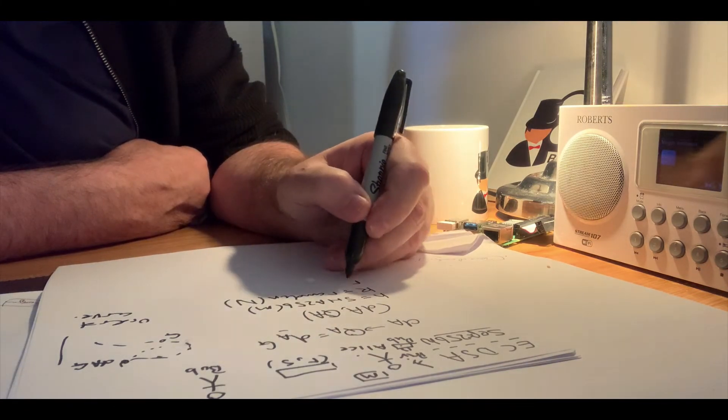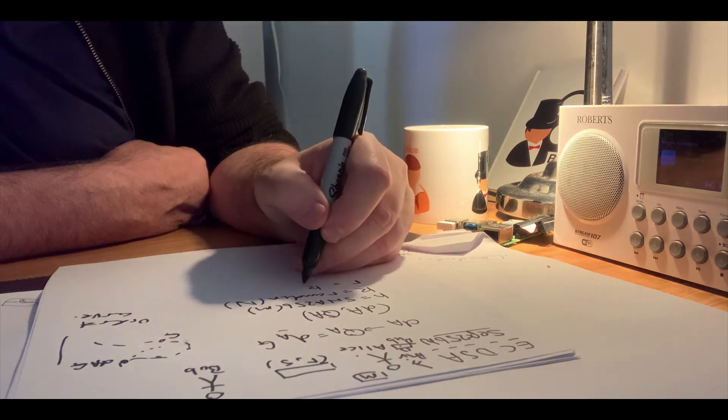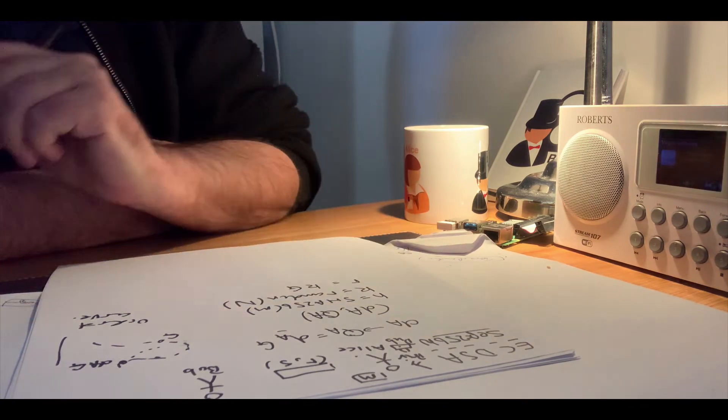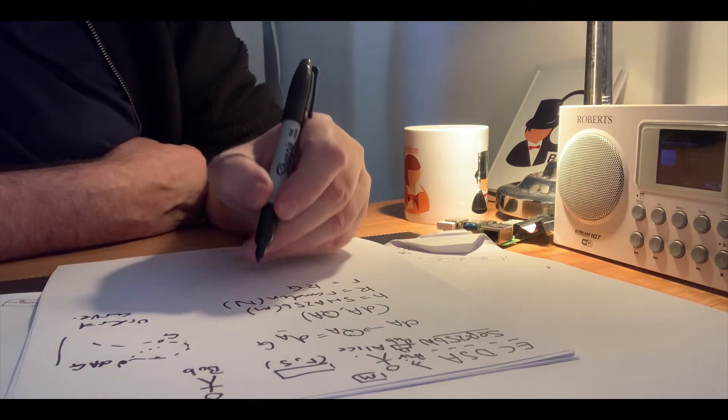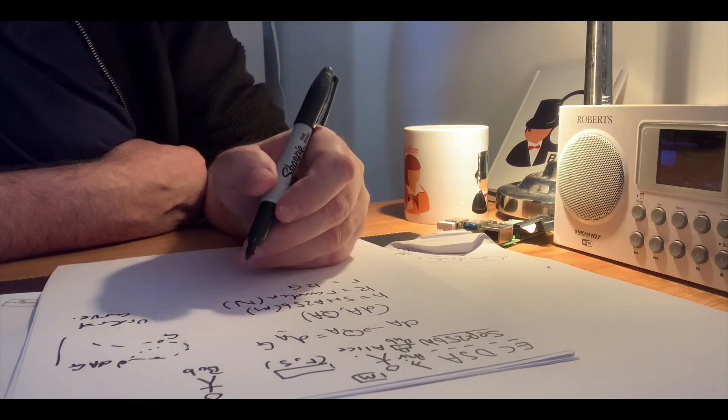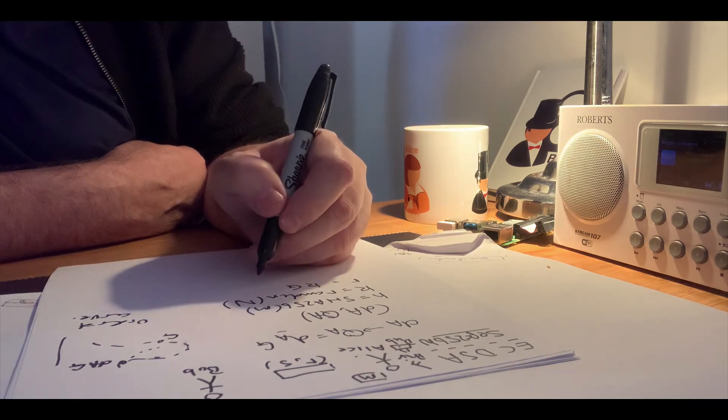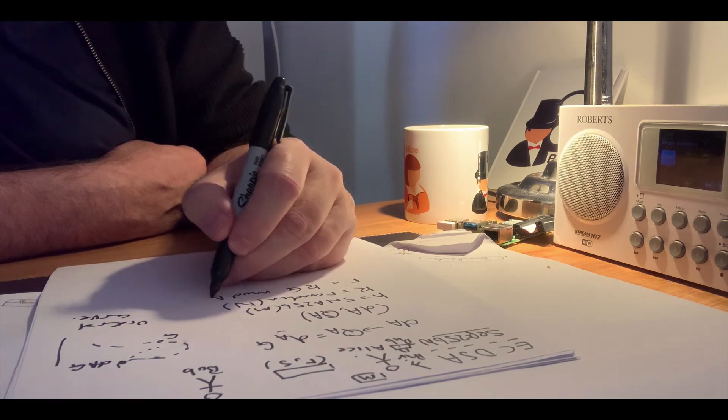She then takes this r value and calculates a point in the elliptic curve of k times G, and then we'll take the x value of that and also perform a mod n.